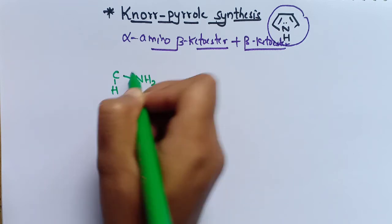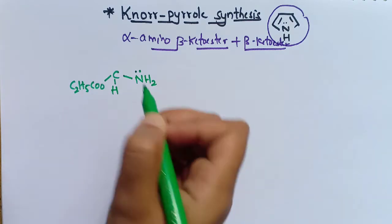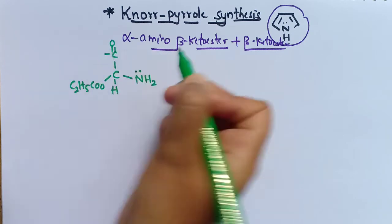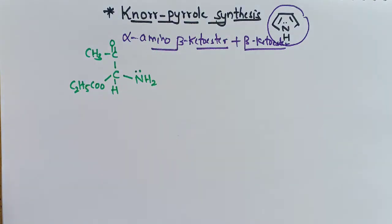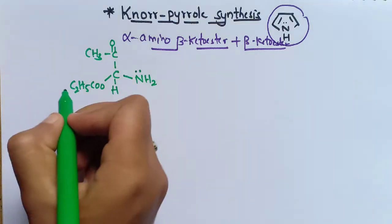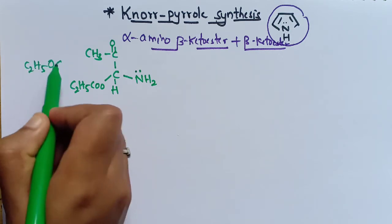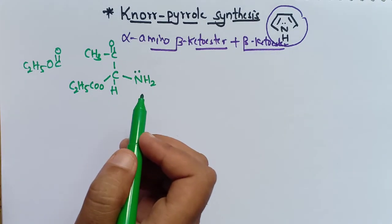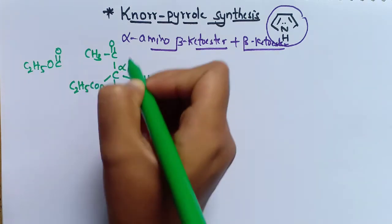The alpha-amino beta-keto ester has the structure: CH-NH2 with a lone pair of electrons, C2H5-COO (the ester group), and C=O for the carbonyl carbon with CH3 attached. It is called so because here is the ester functional group, written as C2H5-O-C=O. The first carbon attached to the functional group is the alpha carbon.